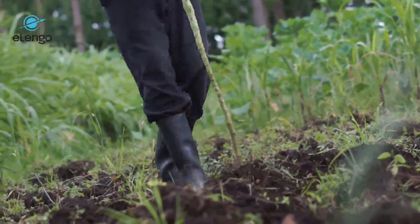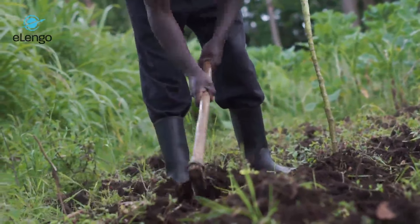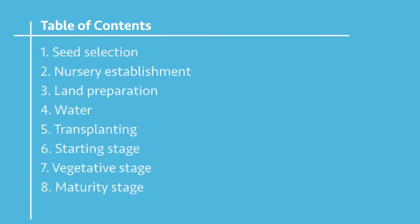From there we will look at land preparation — the aspects you need to address to establish your crop well. We are also going to look at water: where the water you are going to use will come from — whether it is rain-fed or from an irrigation water source.